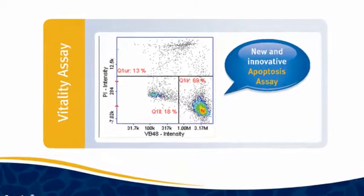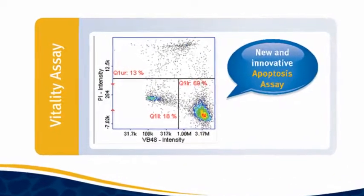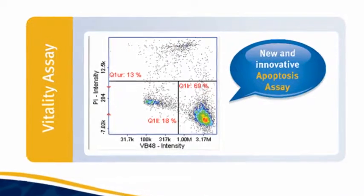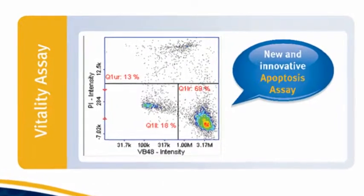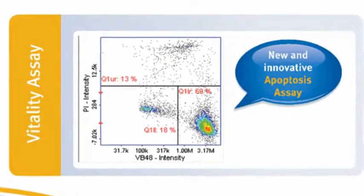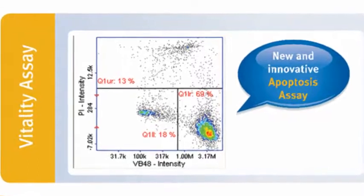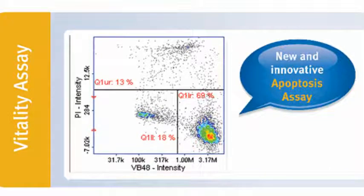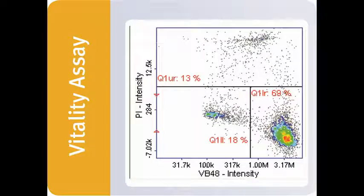Solution 6 contains Vitebrite 48 and propidium iodide. Vitebrite 48 binds to free thiols in the cell and becomes fluorescent; the level of free thiols correlates with apoptosis. Propidium iodide can only enter non-viable cells and bind to DNA, so only dead cells are stained with propidium iodide. The results show a histogram of the Vitebrite 48 intensity together with a scatter plot where the cell intensity of Vitebrite 48 is plotted against propidium iodide intensity.